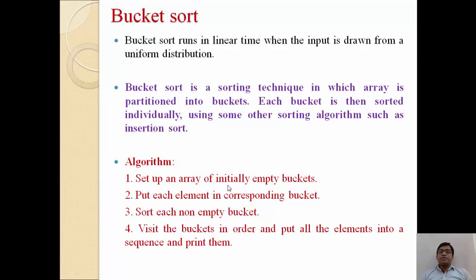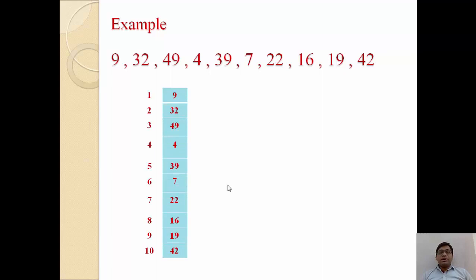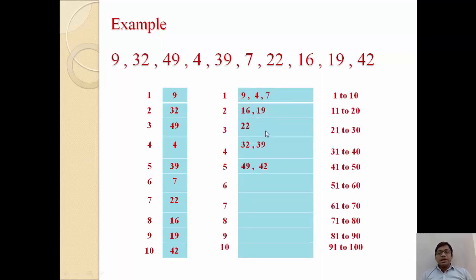Let us take one example so you can easily understand. We have a list of numbers and we want to convert this random list into ascending order using bucket sort. As discussed, we first store the list in one array, then partition into different buckets. For example, if we have 10 elements, we store them in one array and then partition the elements into different buckets based on range.